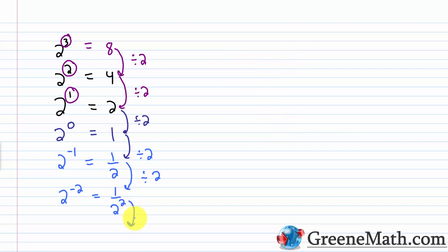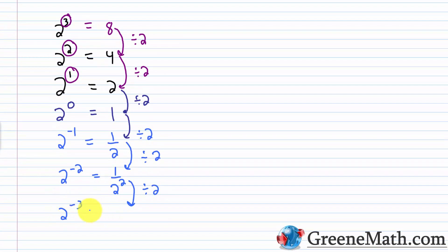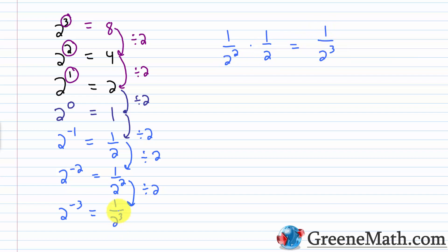Going one more step, two to the power of negative three: divide one over two squared by two again, so the exponent increases by one, giving one over two cubed, or one eighth. You'll notice that the exponent in the denominator matches the original negative exponent in terms of absolute value — that pattern holds each time, and it leads us to our general rule.